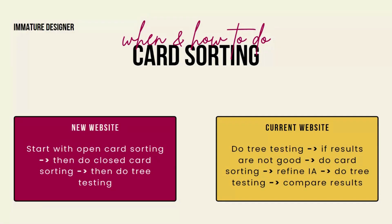For a current live website, you first start with tree testing. If the results are not good and changes are needed, you then take users and ask them to do card sorting. After card sorting, you refine the information architecture, and then do tree testing again. You compare the results of the previous and new tree testing to understand whether things are improving or not. That's how card sorting helps you improve your product.